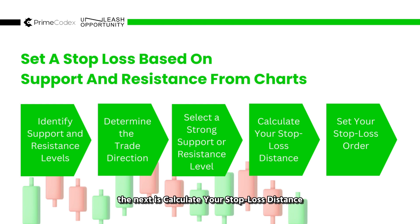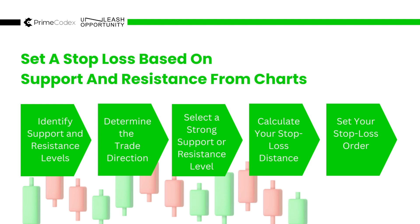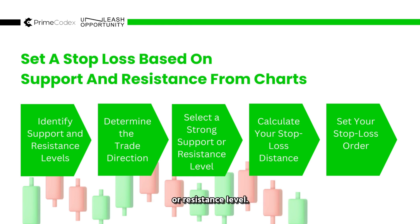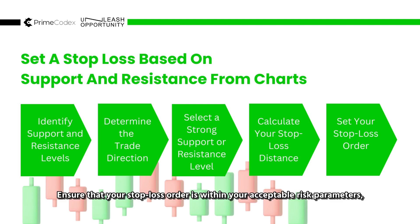Next, calculate the stop loss distance between your entry point and the support or resistance level you selected. Ensure that the stop loss distance is appropriate for your risk tolerance and trading strategy. Avoid setting it too close, as this can result in premature stop-outs due to normal price fluctuations. Finally, set your stop loss order at or just beyond the selected support or resistance level. If you're going long or buying, place your stop loss just below the relevant support level. If you're going short or selling, place your stop loss just above the relevant resistance level. Ensure that your stop loss order is within your acceptable risk parameters — typically a predetermined percentage of trading capital.